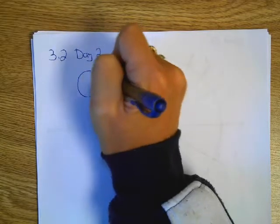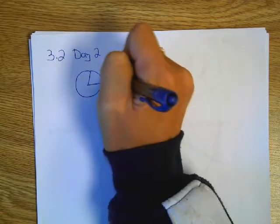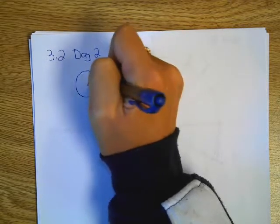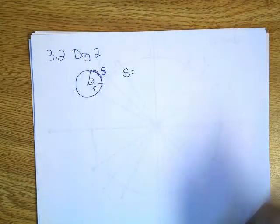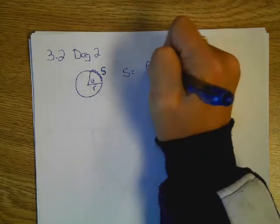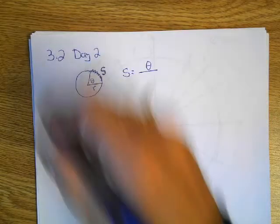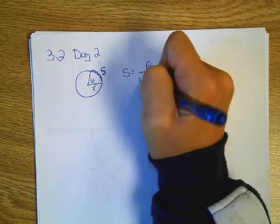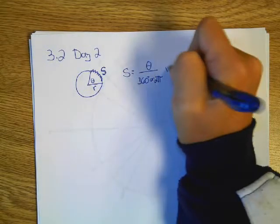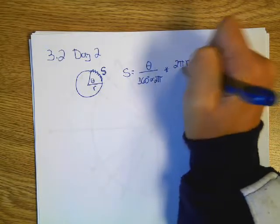We are looking at 3-2 day 2, and just a quick review of our arc length formula: arc length, radius, and angle measure. Remember our common sense was we're going to take the fraction of the circle by taking the angle measure and dividing by a full circle's angle measure, which is either 360 degrees or 2π, depending on what the top one is. And then we're going to multiply by circumference 2πr.